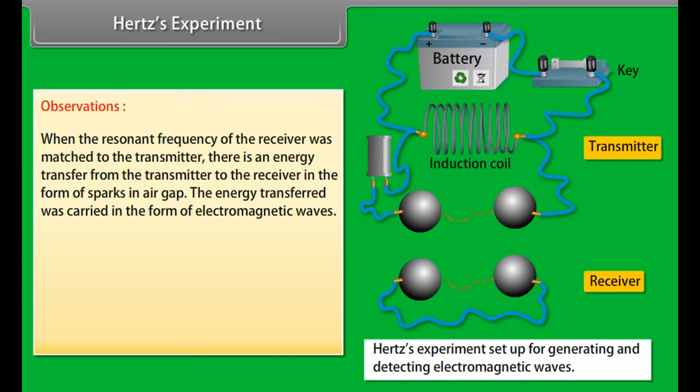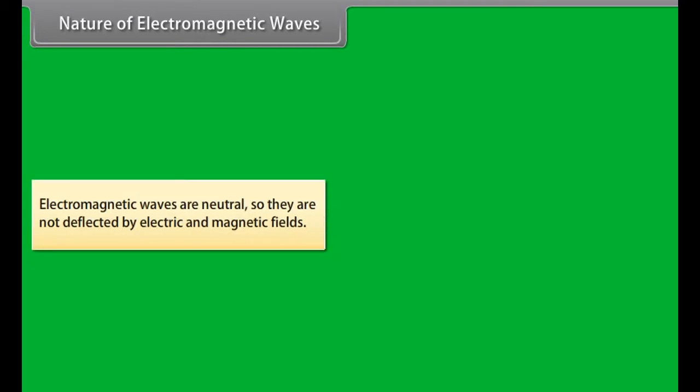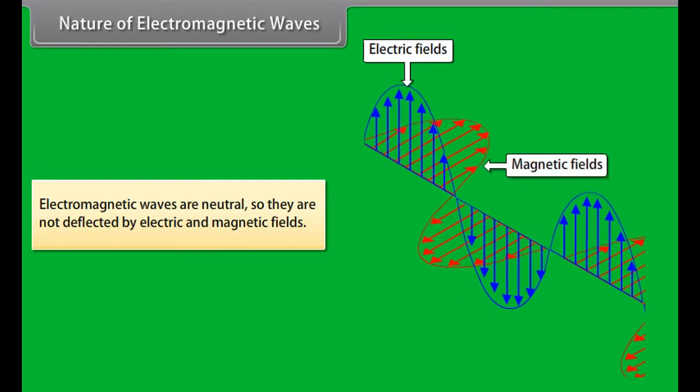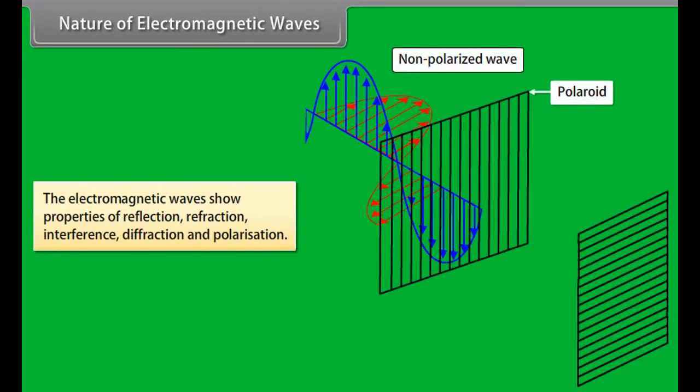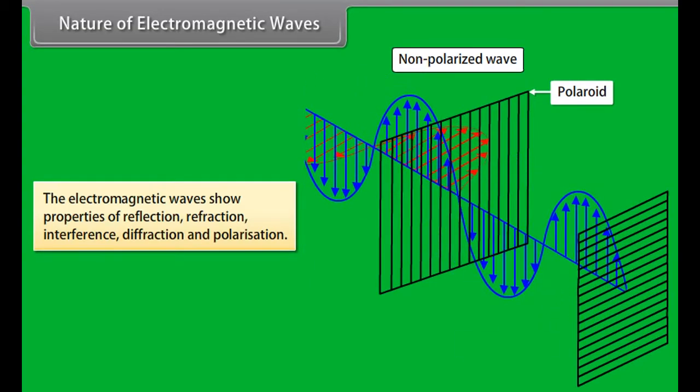Observations. When the resonant frequency of the receiver was matched to the transmitter, there is an energy transfer from the transmitter to the receiver in the form of sparks in air gap. The energy transferred was carried in the form of electromagnetic waves. When the gap in the receiver is perpendicular to the gap in the transmitter, no spark appears at the receiver gap. That is no electromagnetic wave is detected. When the two gaps are parallel, the production of sparks in the receiver gap is maximum. Assessment. Before proceeding further, let us know how much have you learned. Drag and drop the correct option.